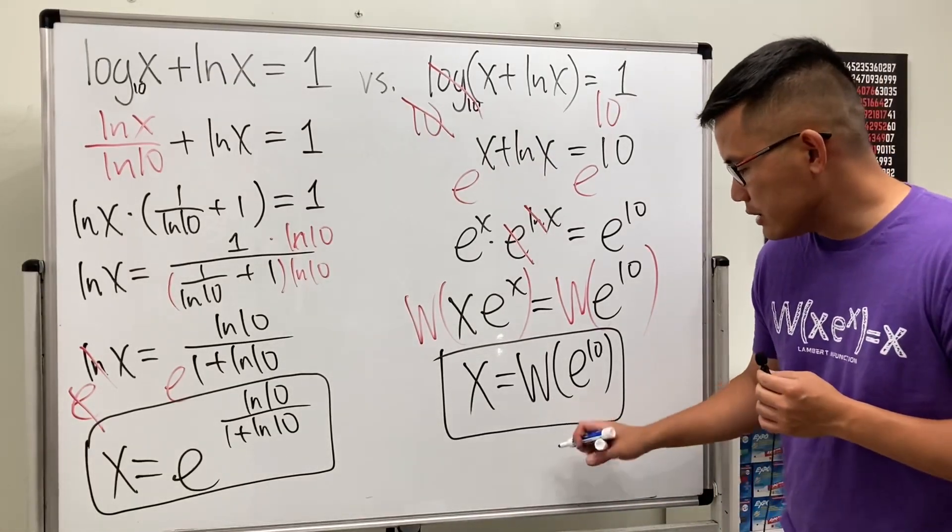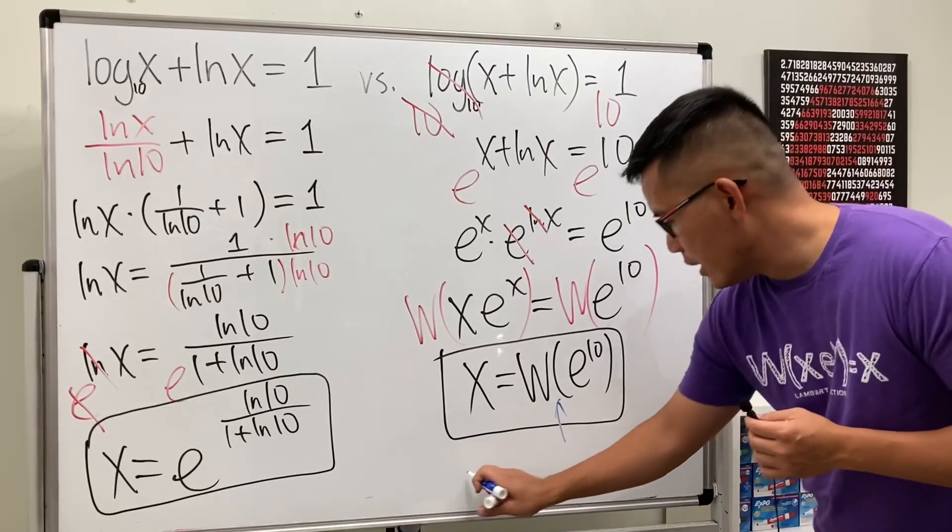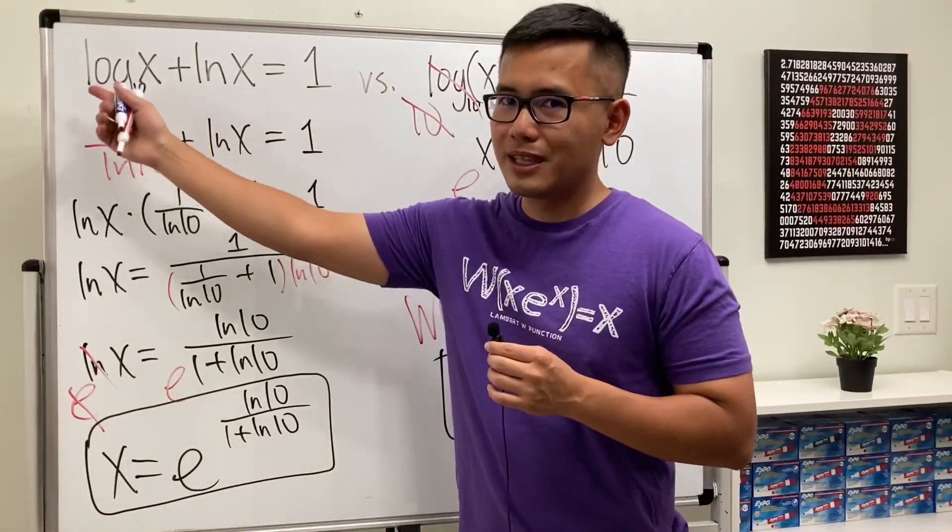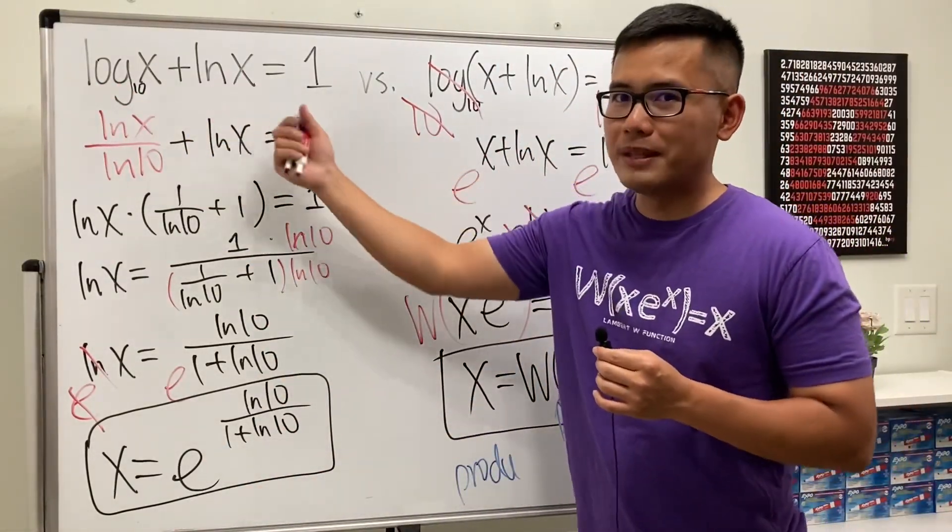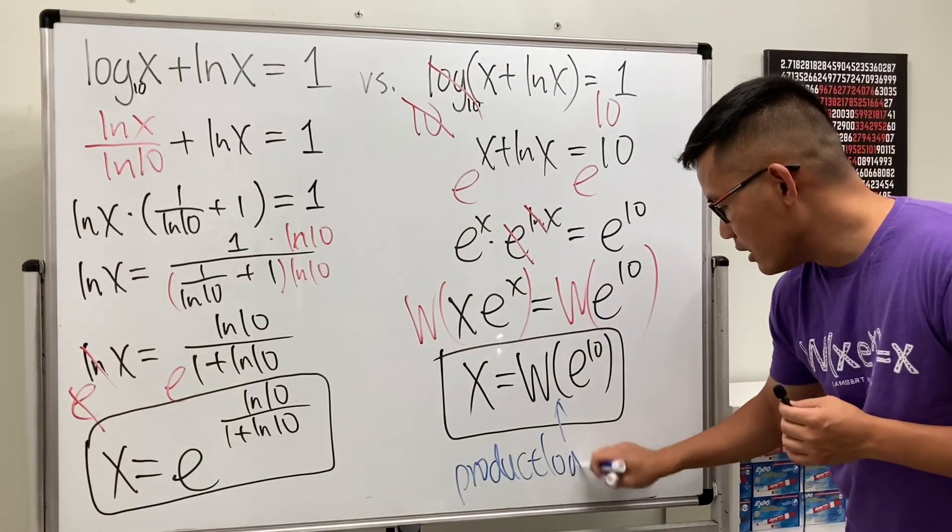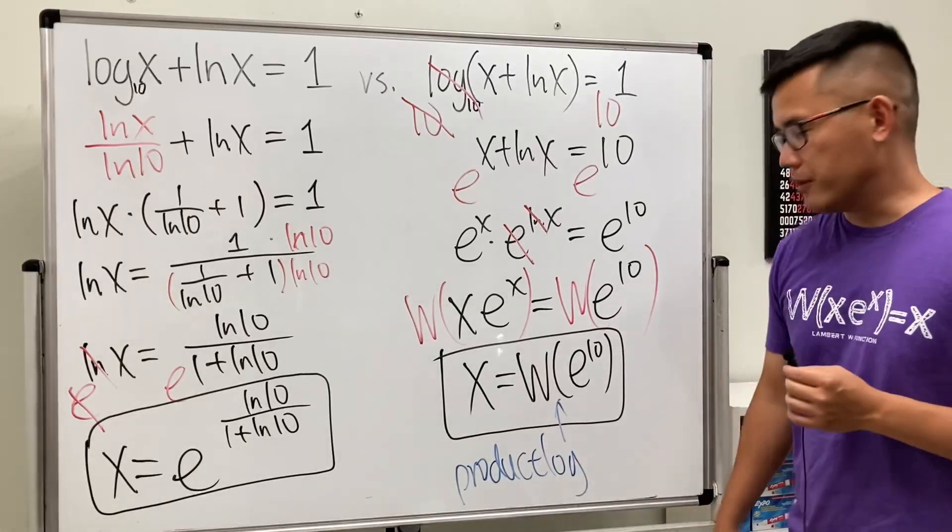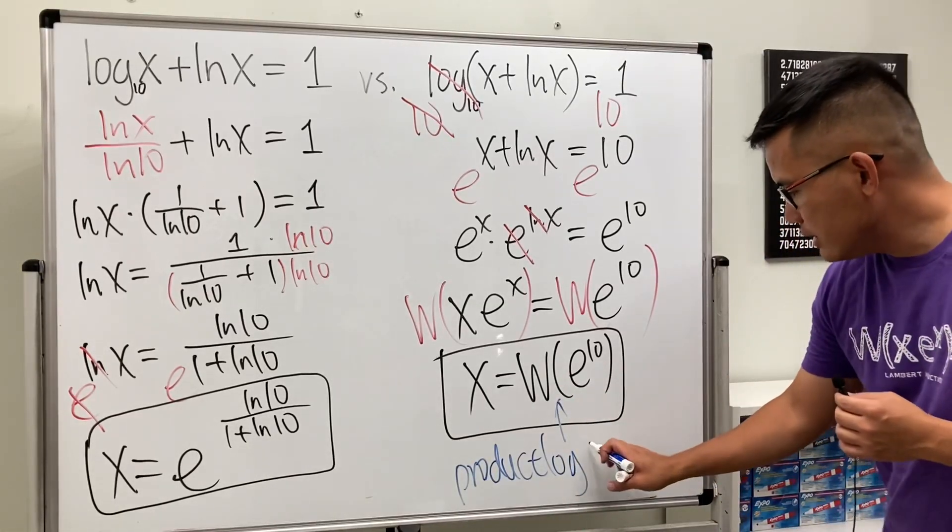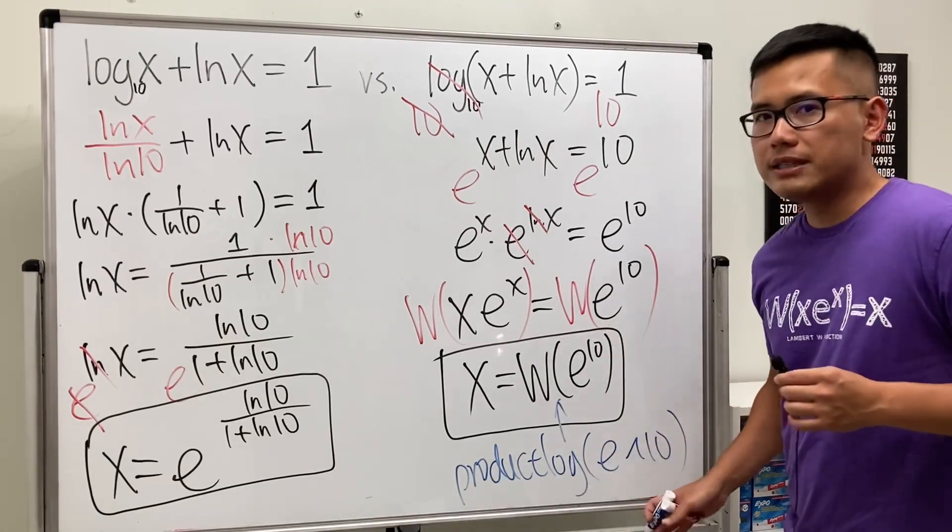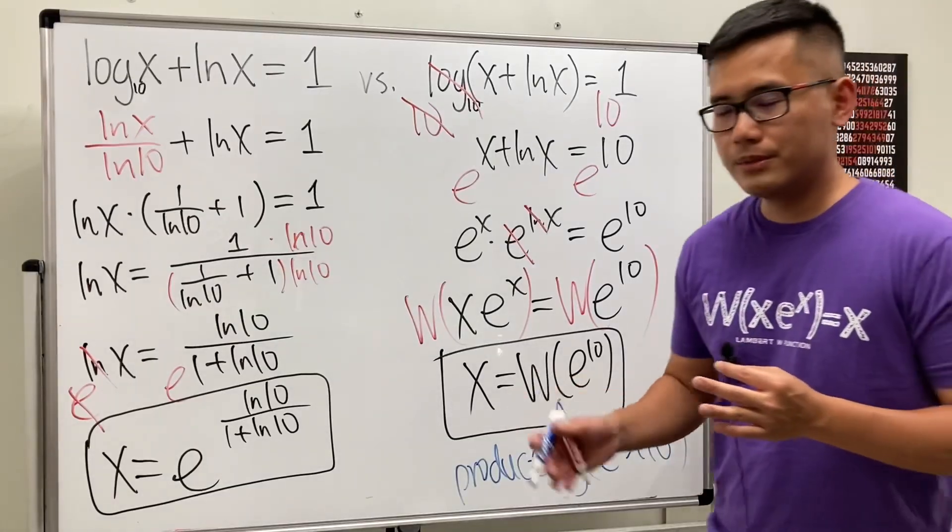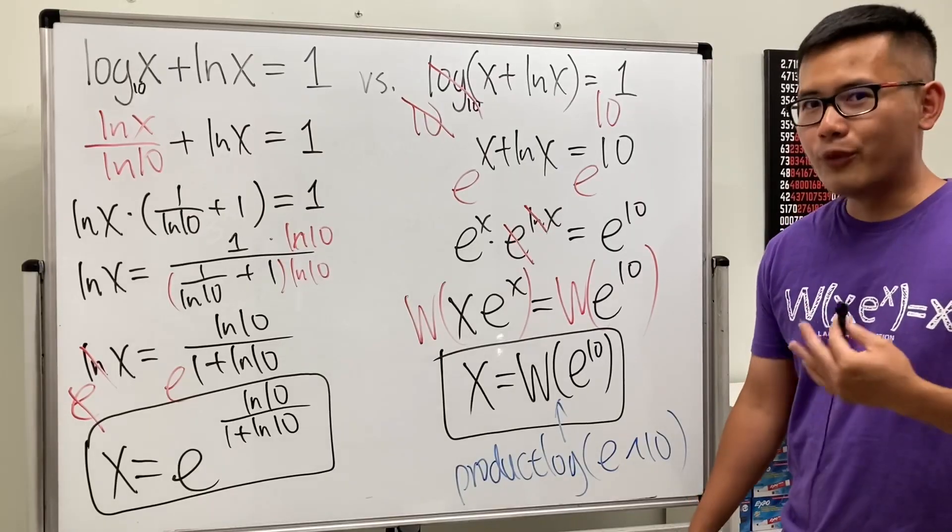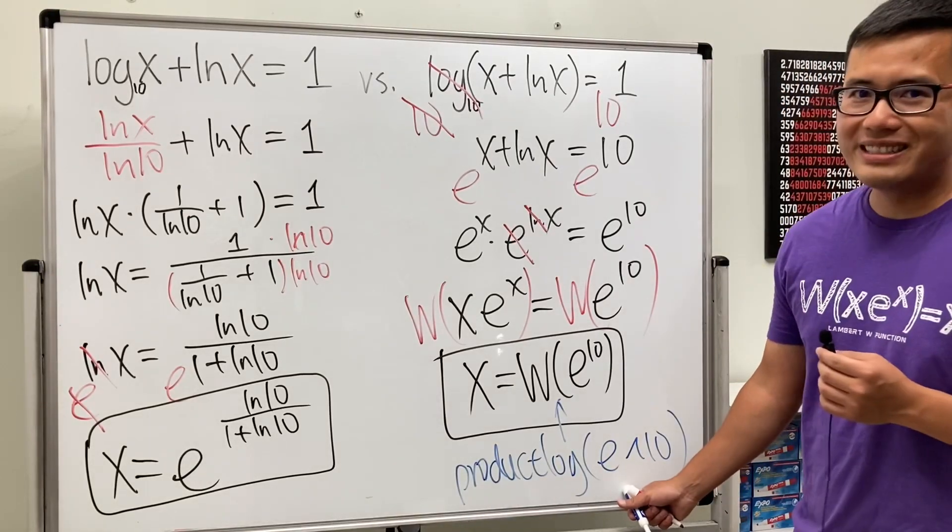And the way that you can enter this is, you can just enter this as product log. So, we have the common log, because that's log base 10. And the natural log, that's log base e. And then here now, we see the so-called product log. Yeah, so the Lambert W function, that's what W is for. And then just enter this, and then do e to the 10th power. Go ahead, try this out on a computer, or Wolfram Alpha, or on your phone, on iPad, or whichever powerful enough software. And let me know what the answer is.